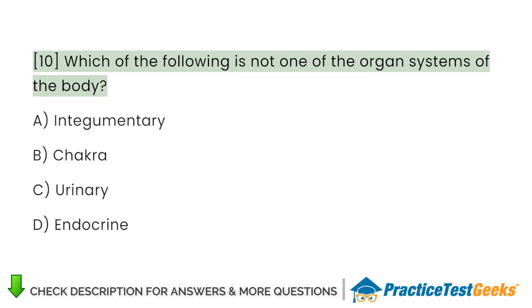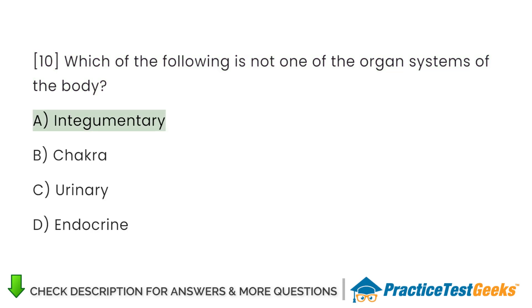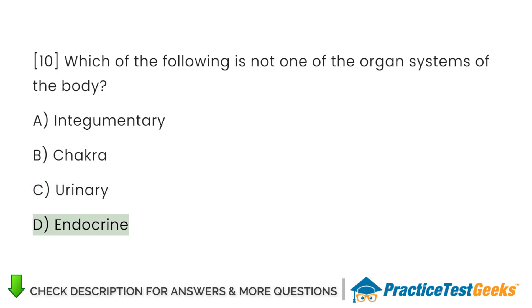Which of the following is not one of the organ systems of the body? A. Integumentary. B. Chakra. C. Urinary. D. Endocrine.